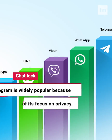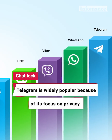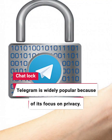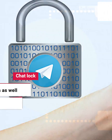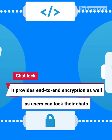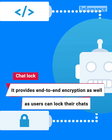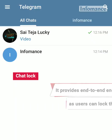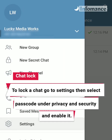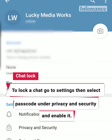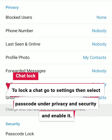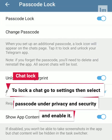Chat Lock. Telegram is widely popular because of its focus on privacy. It provides end-to-end encryption, and users can also lock their chats. To lock a chat, go to Settings, then select Passcode under Privacy and Security, and enable it.